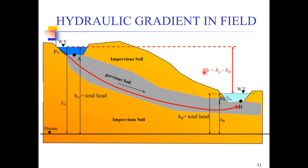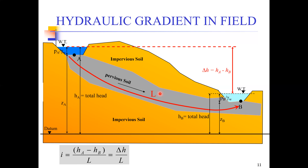The hydraulic gradient equals head loss divided by the length of the seepage path. The length of the seepage path is the distance from point A to point B along which the water is flowing — represented by the red line in the figure. Knowing the head loss and the length of the seepage path, we can easily determine the hydraulic gradient using this simple equation.